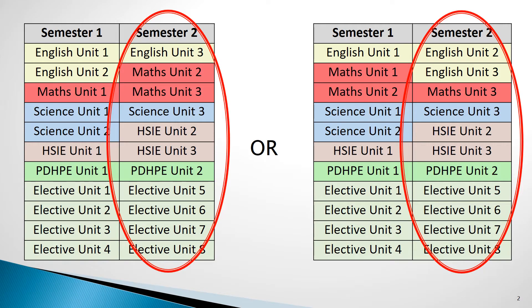To refresh your memory, STRIVE is the curriculum structure which provides students with more choice for electives across Years 9 and 10. During Semester 1, students undertook compulsory units in English, Maths, HISI, Science and PDHPE.